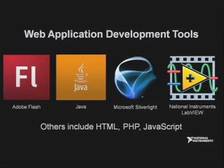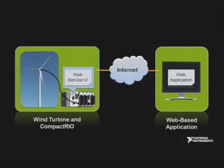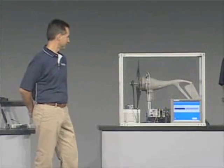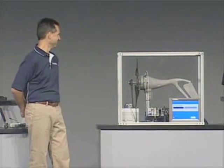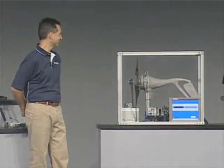Let's begin by describing the hardware setup here on stage. We have part of a wind turbine connected to an NI CompactRIO device. The CRIO is reading vibration and velocity data from the turbine and writing this to a web service created using LabVIEW 2009 that's been pre-deployed to the CRIO. Since we're a little short on wind on stage, we also have the CRIO turning the turbine.